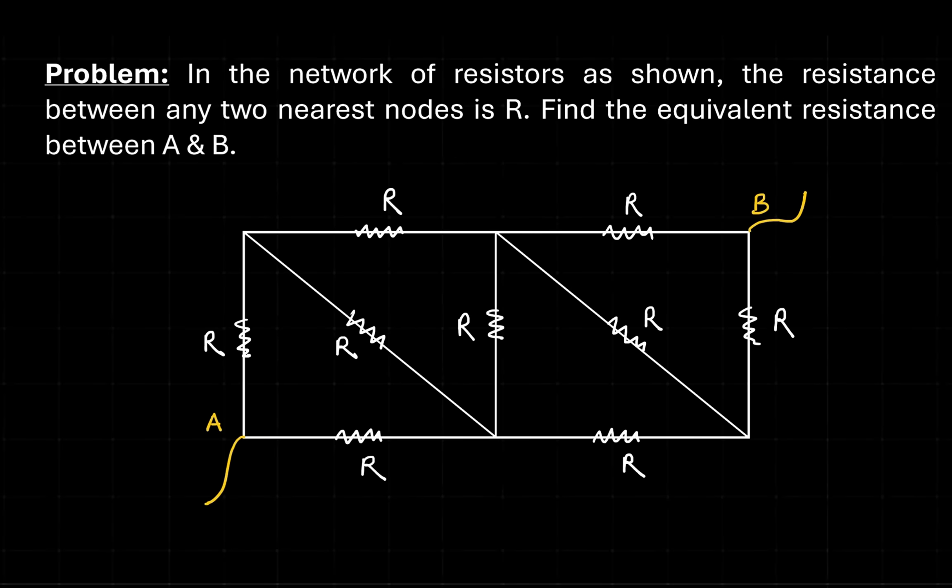Hey all, this is Prajesh Shodri, Quantum Guru. In this video I am going to present a very good problem on combination of resistors. As you can see on your screen, there is a network of resistors. The resistance between any two nearest nodes is R, and we have to find the equivalent resistance between A and B.